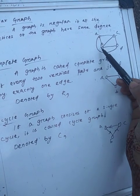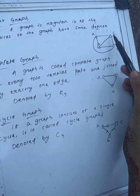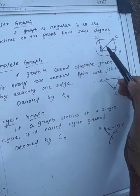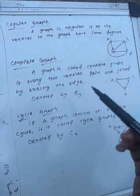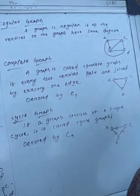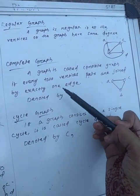A graph is called complete if every two vertices pair are joined by exactly one edge. We denote this by Kn.